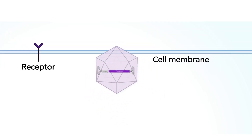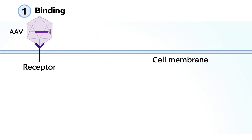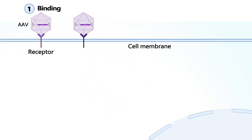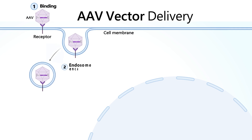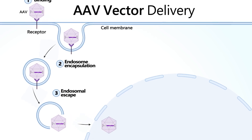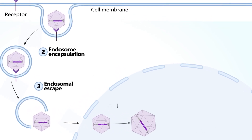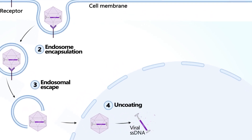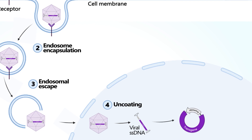Upon administration, the AAV capsid binds to the cell membrane and becomes encapsulated into a vesicle. The vesicle is degraded, allowing the capsid to enter the nucleus. Upon entry into the nucleus, the capsid is degraded, exposing the transgene to the nucleus, where it forms episomal DNA and does not integrate into the genome.